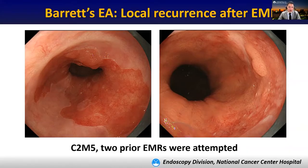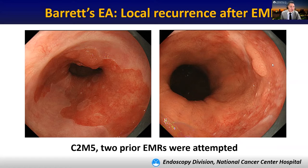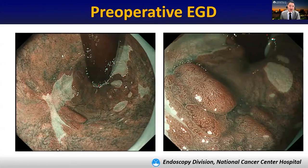Let me show you one case. High-definition white-light endoscopy shows two elevated lesions in Barrett's esophagus, C2M5. A post-EMR scar was covered with squamous epithelium. These two lesions were local recurrence after incomplete endoscopic mucosal resection. NBI magnifying endoscopy showed the tumor demarcation line.